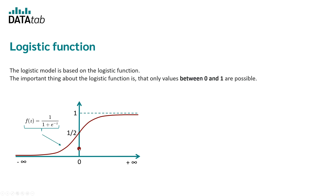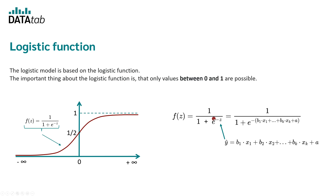The equation for logistic regression is 1 divided by 1 plus e to the power of minus z, where for z we use the standard linear regression equation: a plus b1·x1 plus b2·x2 up to bk·xk. Here, b1 to bk are the regression coefficients, a is the intercept, and x1 to xk are the independent variables. After inserting all of that, we get our logistic function. To determine the coefficients so the model best represents the data, we use the maximum likelihood method, and statistics programs provide us with the values b1, b2, up to bk.